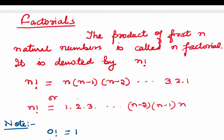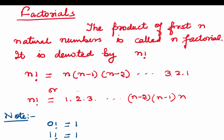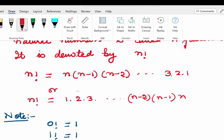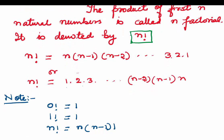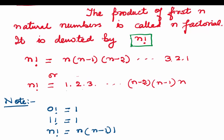Now let's come to factorials, which play a very important role in describing permutations. The product of the first n natural numbers is called n factorial, denoted n! So n! = n × (n−1) × (n−2) × … × 3 × 2 × 1. A few things to always remember: 0! = 1, and 1! = 1.